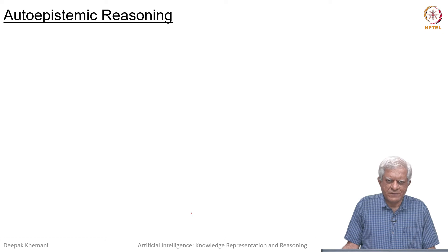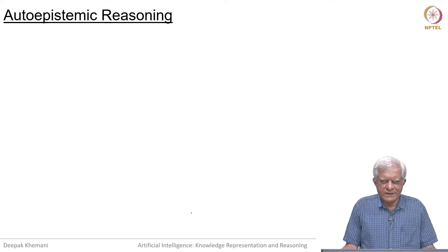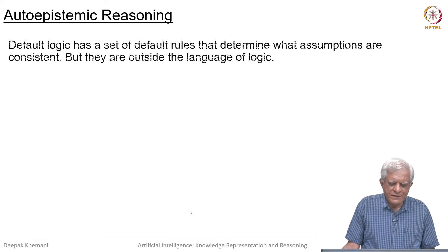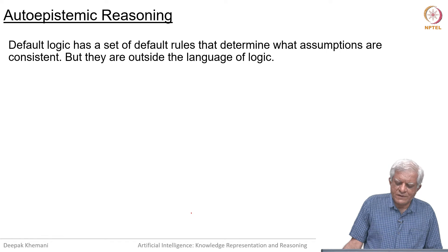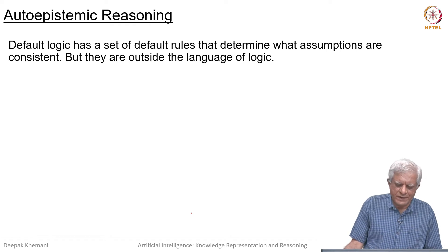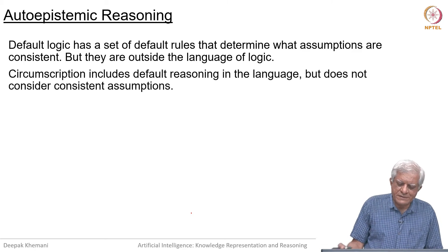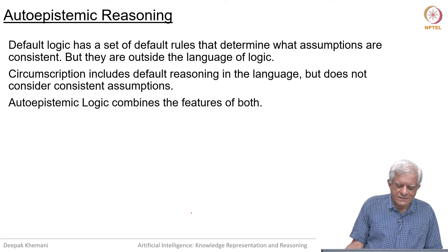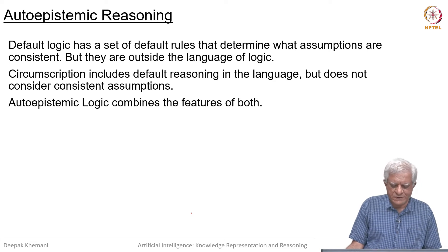Welcome back. We are looking at default reasoning. We have looked at three approaches and we are looking at the last one now, which is auto-epistemic reasoning. Default logic has a set of default rules that determine what assumptions are consistent to make, but they are outside the language. Circumscription has default reasoning built into the language, but is not in a position to make consistent assumptions. Auto-epistemic logic combines the features of both in some sense.